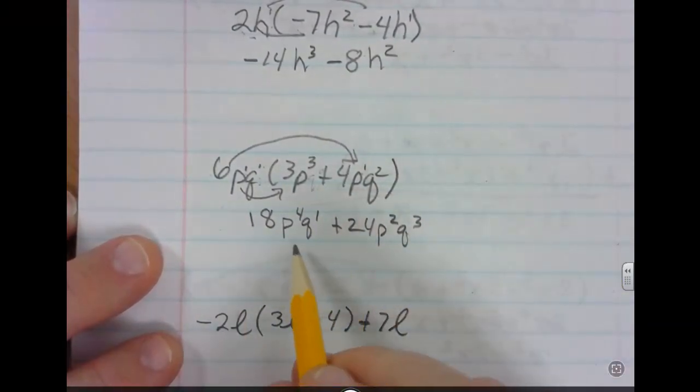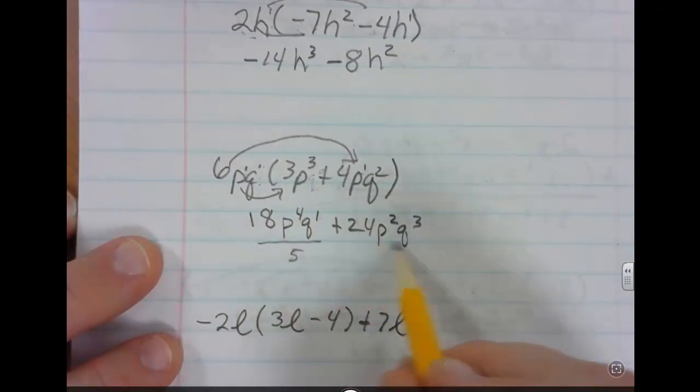Now if we go back to degrees, this term right here has a degree of 4 plus 1, which is 5. And this term right here has a degree of 2 plus 3, which is also 5. These are both fifth degree terms.